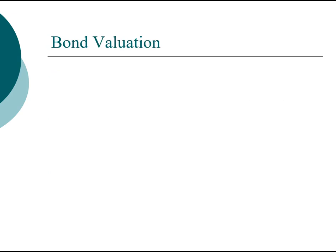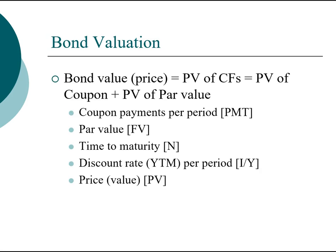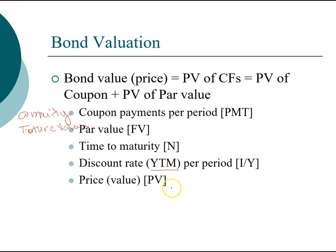Now let's look at an example of how to compute bond valuation. Here's a summary worth writing down. The coupon payment is the annuity cash flow you receive from buying the bond. The par value is the money received at the end of the investment — the future value. The time to maturity depends on the bond. The discount rate we use is always the yield to maturity. The price of the bond is its present value. This is useful information to have handy as we go through the next example.